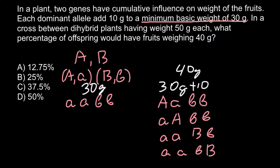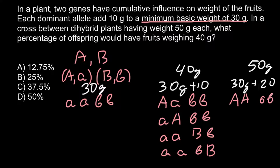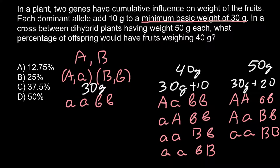Another category can be 30 grams plus 20, so 50 grams. We can have genotypes such as capital A, capital A, small b, small b; or capital A, small a, capital B, small b; or small a, small a, capital B, capital B; and small a, capital A, capital B, small b. I didn't list all variants here — the key is to count the number of dominant alleles. In this category, two dominant alleles add 20 grams to the phenotype.